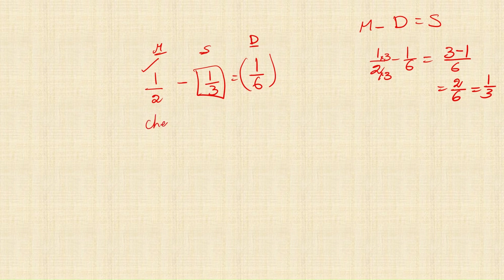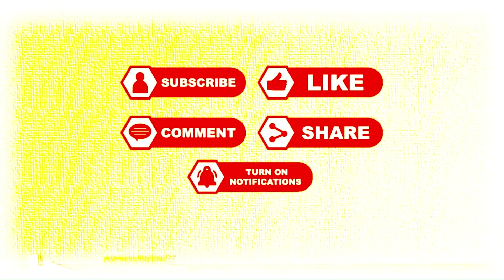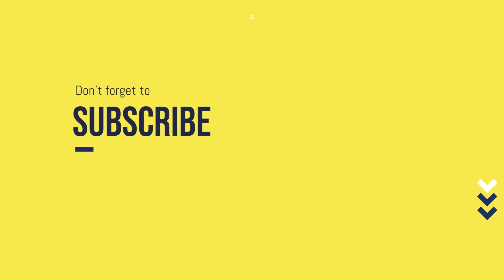Verification: 1 upon 2 minus 1 upon 3. LCM is 6. Cross-products: 1 into 3 is 3, minus 2 into 1 is 2. So 3 minus 2 is 1. The answer is 1 upon 6, which matches the given fraction. So 1 upon 3 is the correct answer.